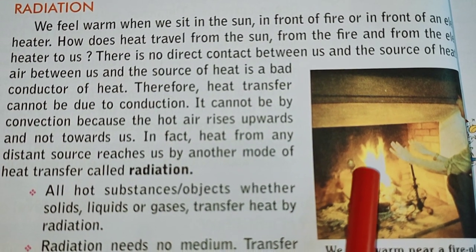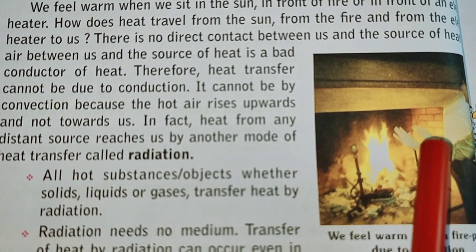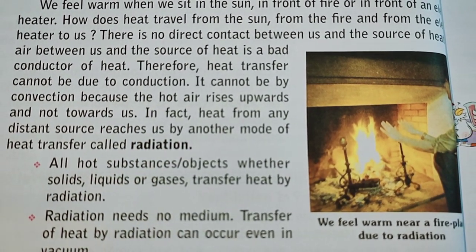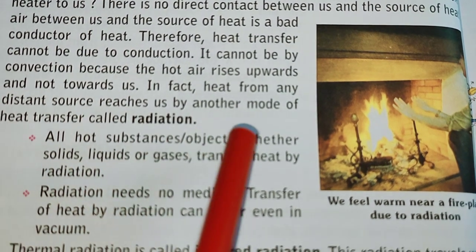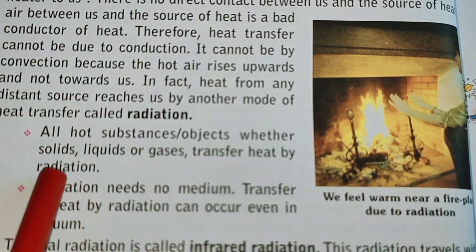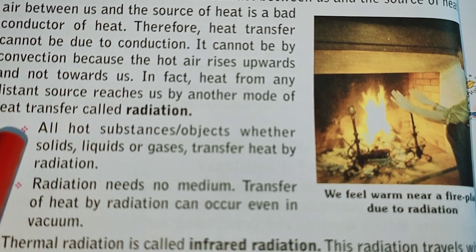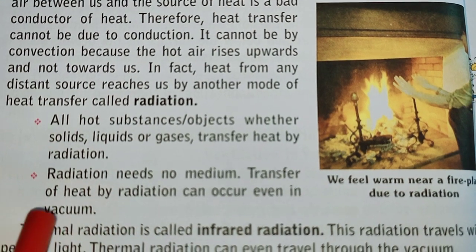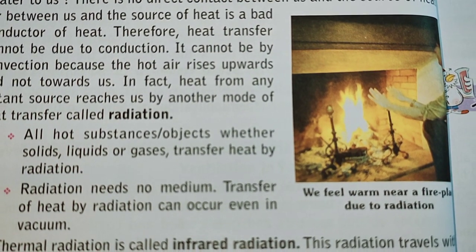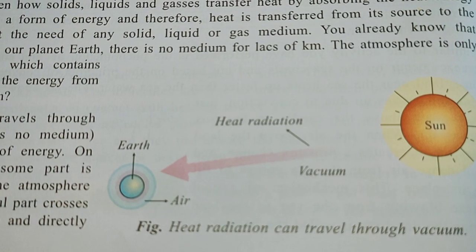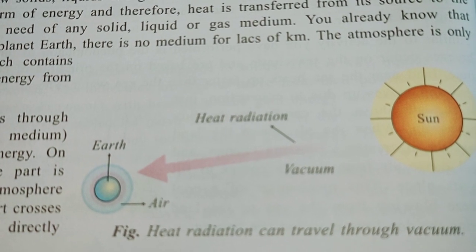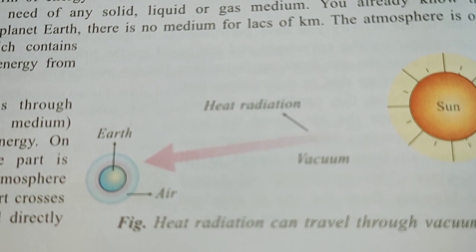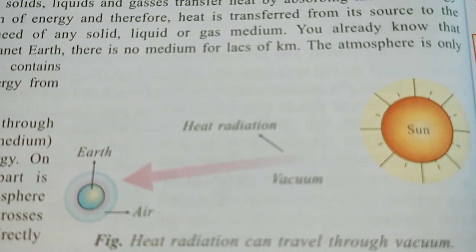Heat from any distant source reaches us by the mode of radiation. All hot substances — whether solid, liquid, or gas — transfer heat by radiation. This method does not need a medium; radiation needs no medium. Transfer of heat by radiation can occur even in vacuum. Heat radiation can travel through vacuum — that is why heat from the sun can reach planets like Earth. Please draw and practice this diagram.